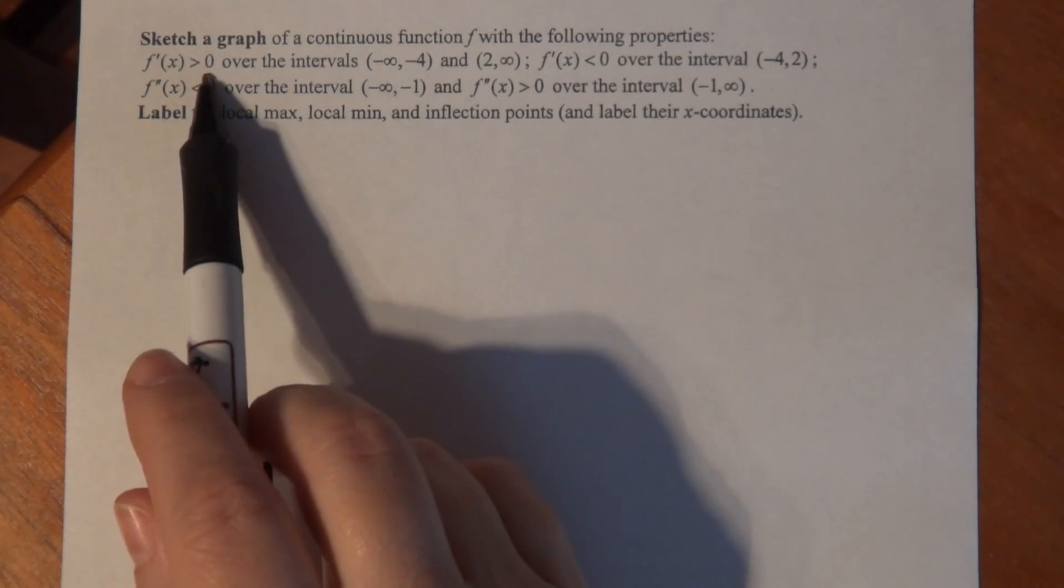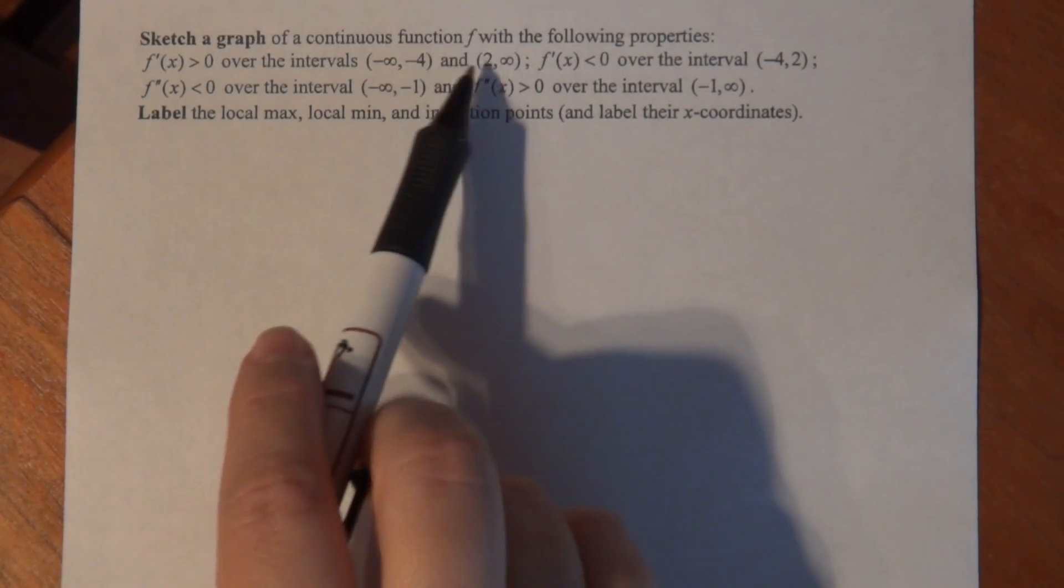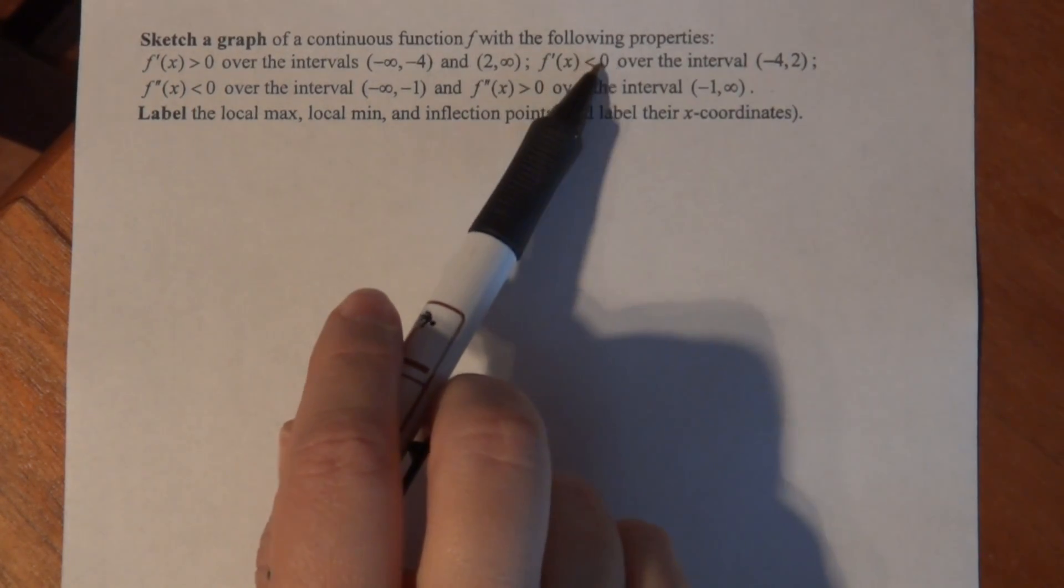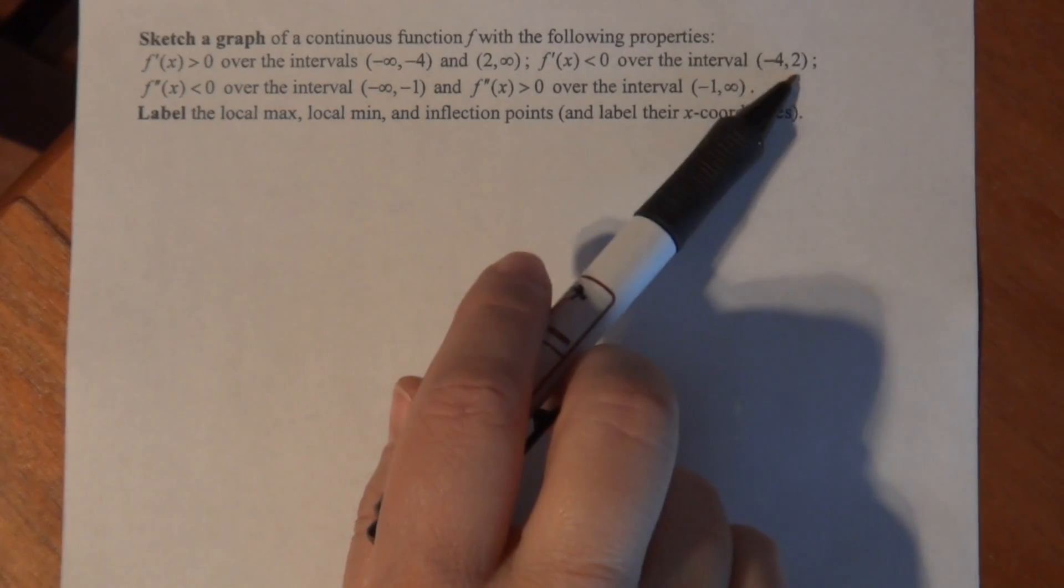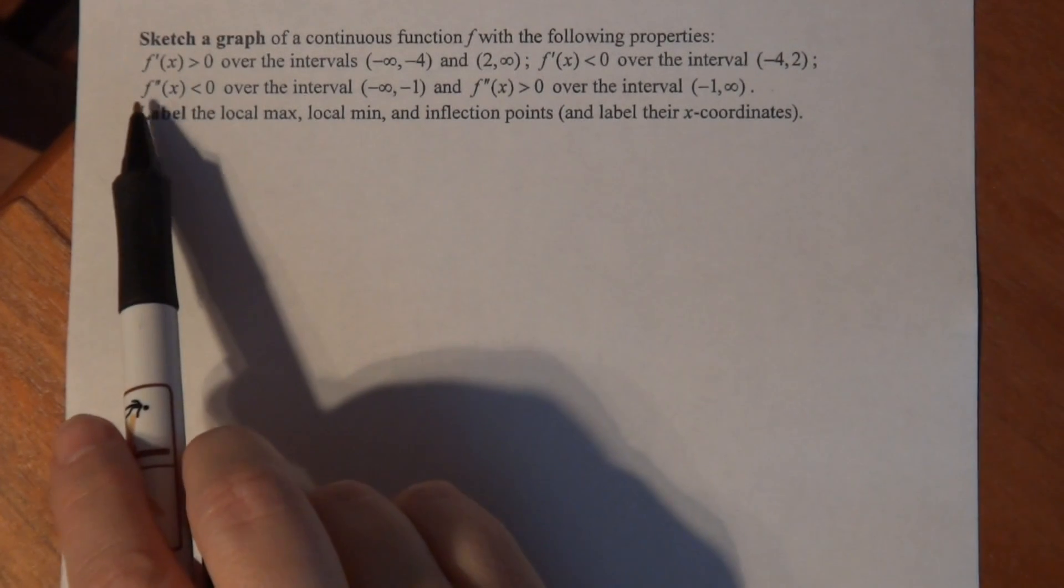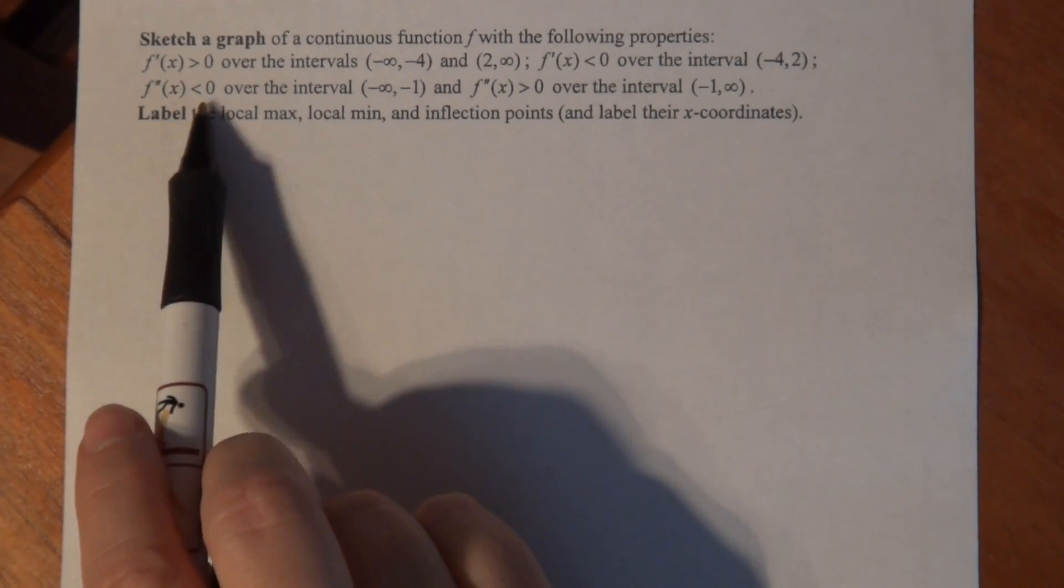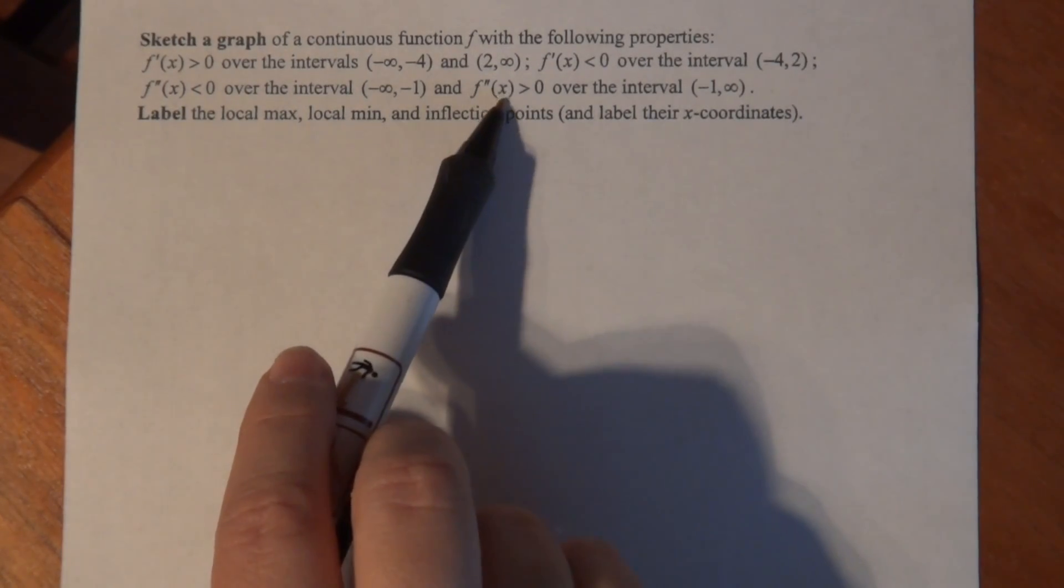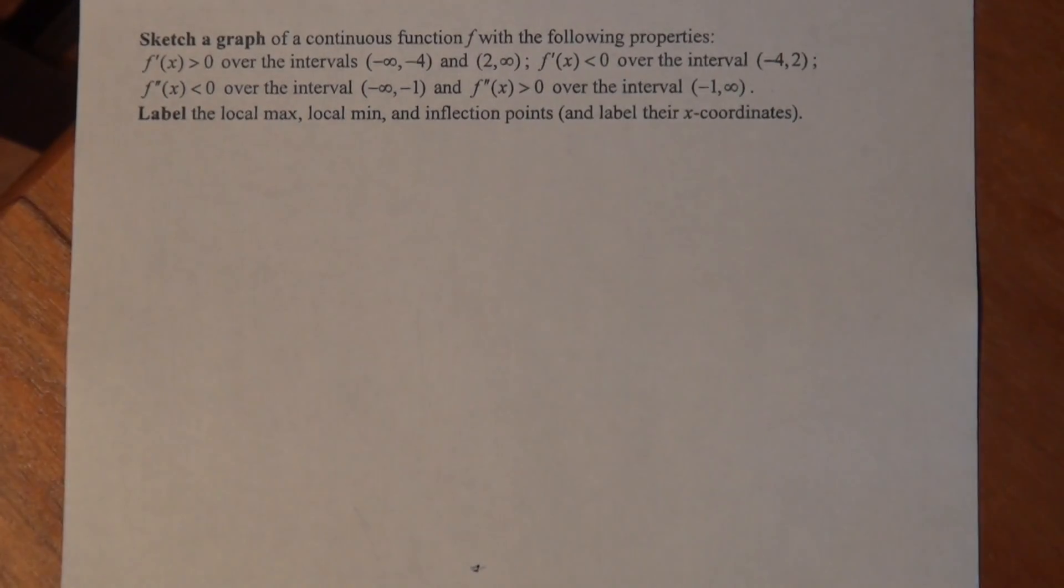So the first derivative is positive over the intervals minus infinity to minus 4 and 2 to infinity, and f prime is negative over the interval from minus 4 to 2. f double prime is less than 0 over the interval from minus infinity to minus 1, and f double prime is positive over the interval from minus 1 to infinity.